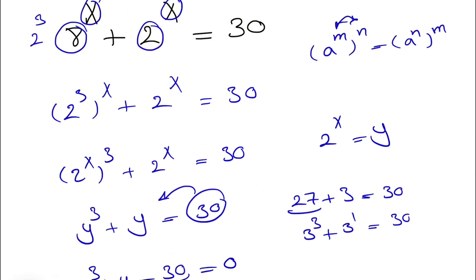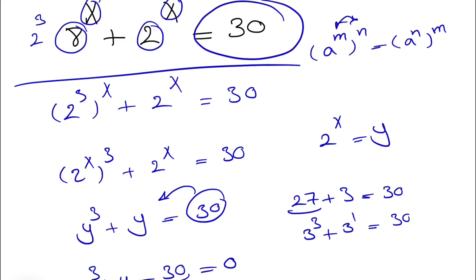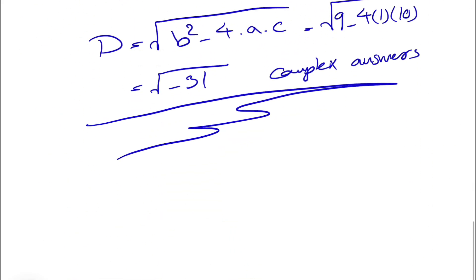As we can see, it's not easy to come up with x by just guessing different numbers, and we need to be familiar with those algebra processes. The answer is log base 2 of 3, which is not easy to guess. You could also graph 8 to the x plus 2 to the x and y equals 30 to find where they intersect.